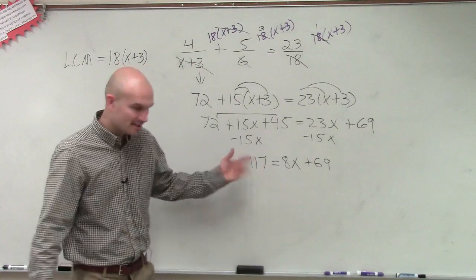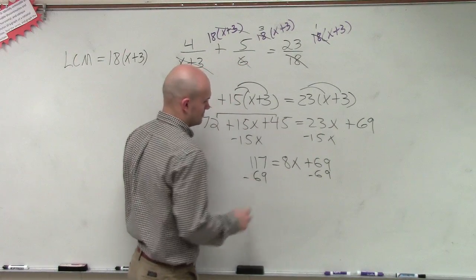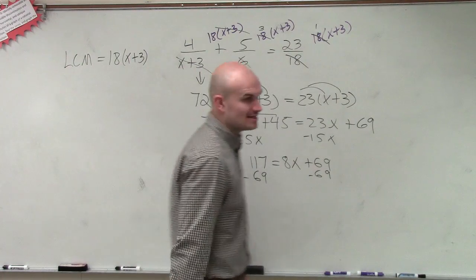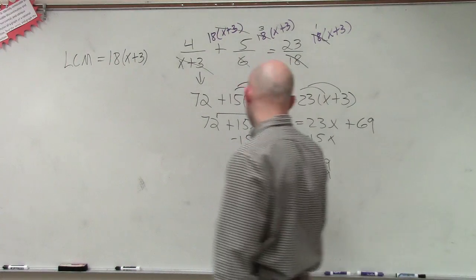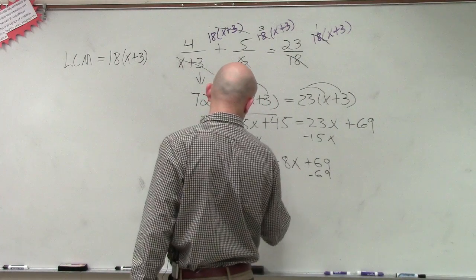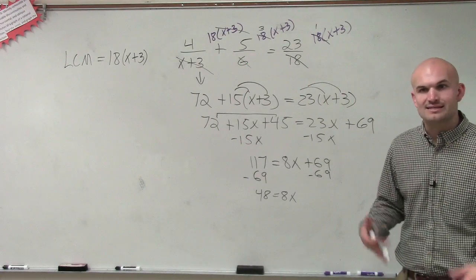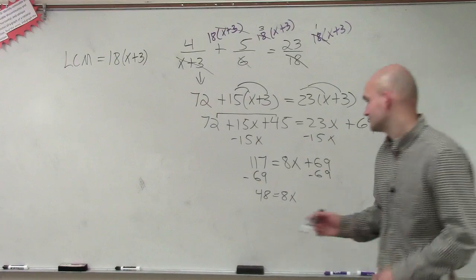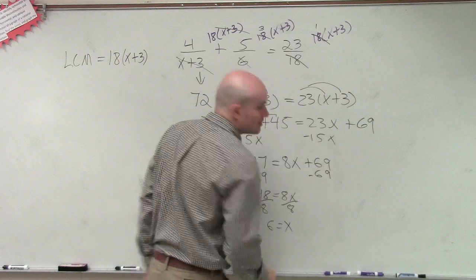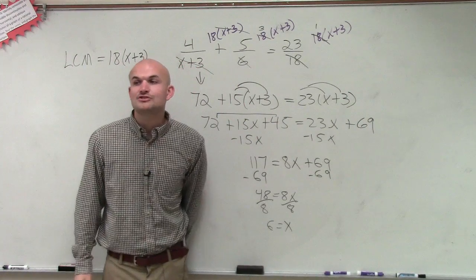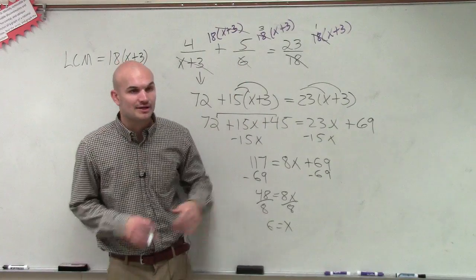And now, to isolate my x, I subtract the 69. So, now, I have 117 minus 69, which will be 48 equals 8x. Then, the last step you want to do is now divide by 8, and you're going to get 6. So, the main important thing, ladies and gentlemen, to do when you're doing this problem is to make sure that you multiply by your LCM.